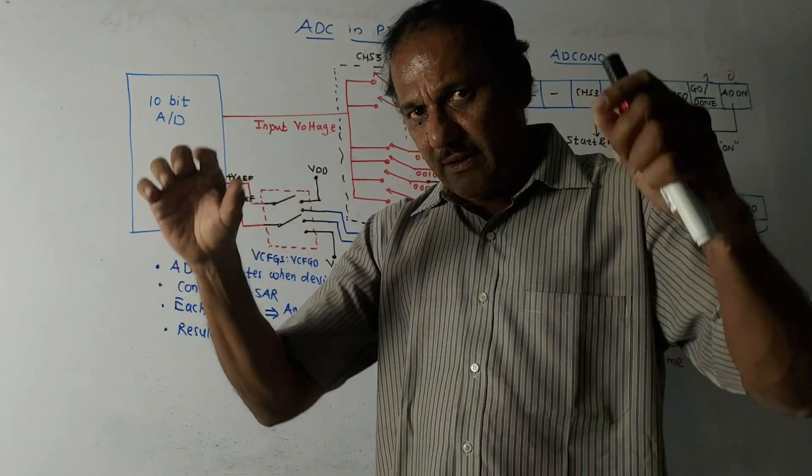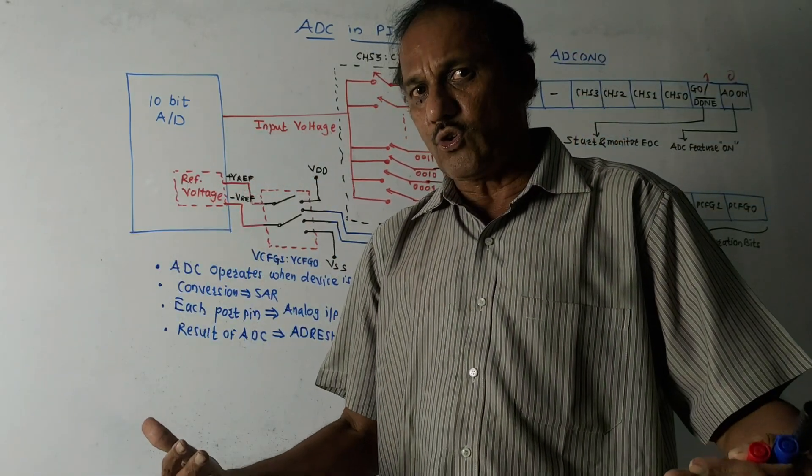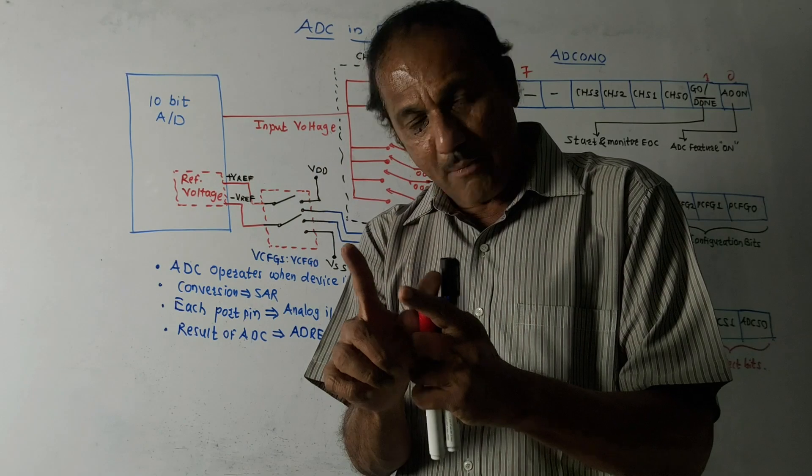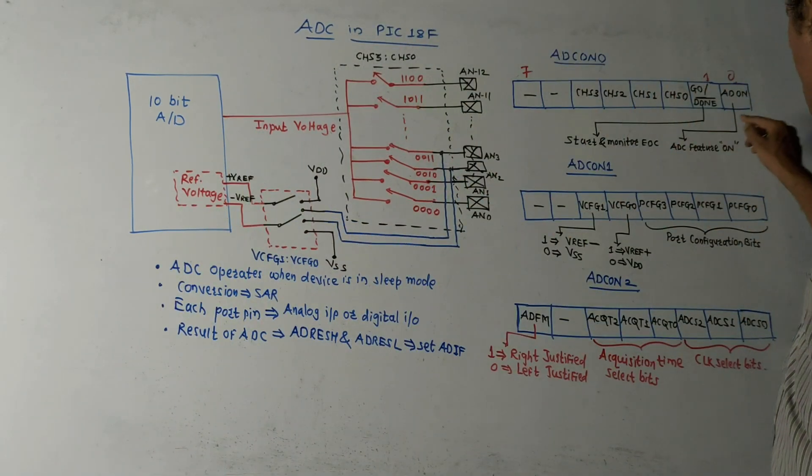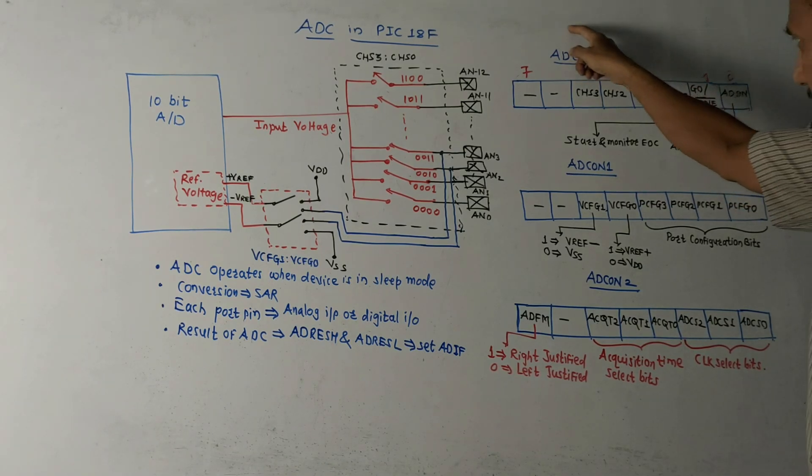By default, when the requirement comes, we have to switch it on by choosing this bit. So this is ADC feature on bit. This is about ADC control register zero, which is used to select a particular channel.